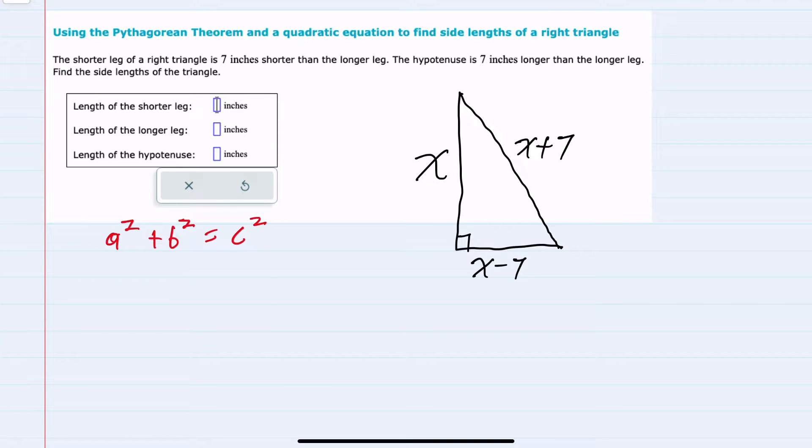So substituting in to the Pythagorean Theorem I'll call the long leg a so a squared is x squared, b would be the short leg here x minus seven squared and then c would be the hypotenuse which is x plus seven squared.